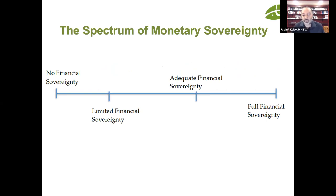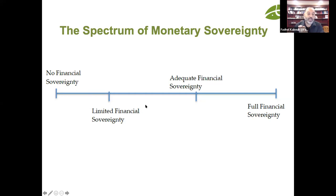MMT — Modern Monetary Theory — is a framework for understanding monetary sovereignty. The basic observation is that not all countries have the same degree of monetary sovereignty — not all countries have the same spending capacity. Countries like Japan, the US, and the UK have a very high level of monetary sovereignty. Some countries have no monetary sovereignty whatsoever — like Ecuador, which fully dollarized its economy, or the CFA franc countries in Africa that use essentially a foreign currency. Most developing countries are somewhere in between.